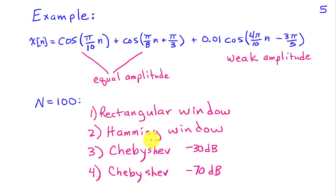So we're going to use N equal 100 and consider the four windows that I just showed you. The rectangular window, the hamming window, the Chebyshev window at minus 30 dB, and then the Chebyshev window at minus 70 dB.